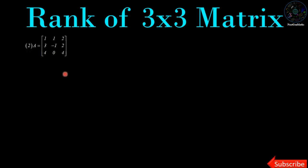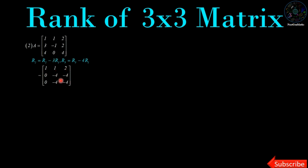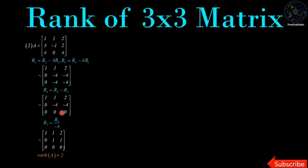Second example: A = [1, 1, 2; 3, -1, 2; 4, 0, 4]. Apply row operations R2 = R2 - 3R1 and R3 = R3 - 4R1. After these operations we get [1, 1, 2; 0, -4, -4; 0, -4, -4]. Then apply R3 = R3 - R2, giving [1, 1, 2; 0, 1, 1; 0, 0, 0]. Rank of A is 2 because the row echelon form contains only 2 non-zero rows.